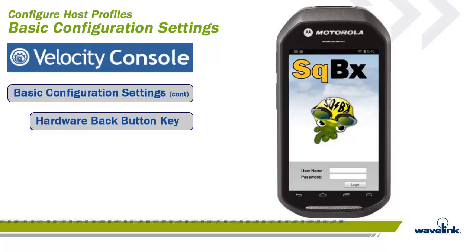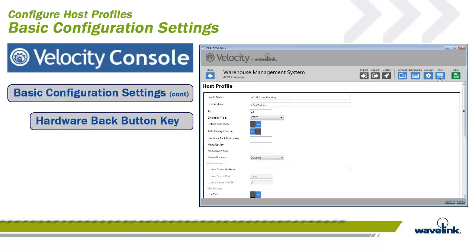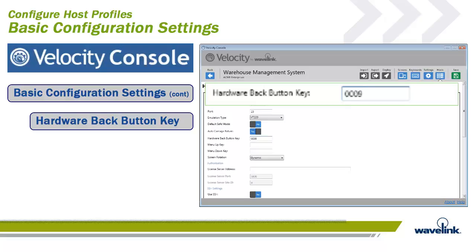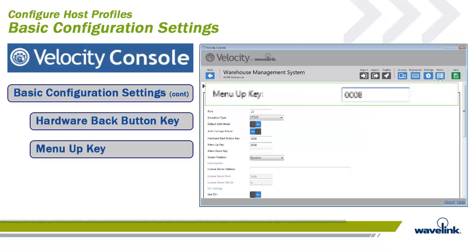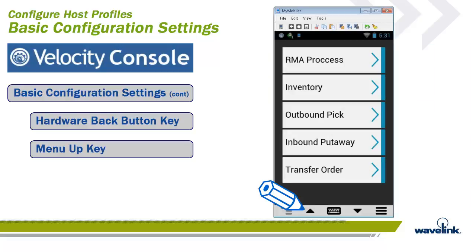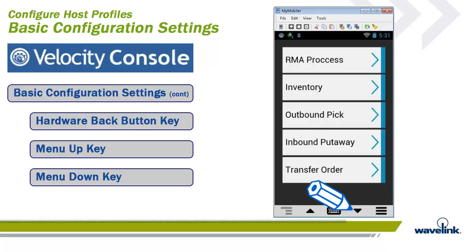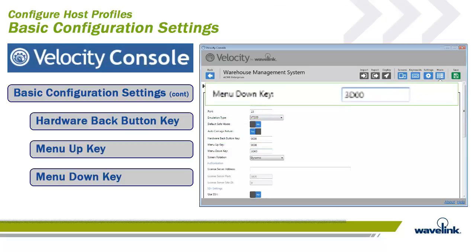Velocity can hijack some keys and remap them to perform different functions on the smart device. The Android hardware back button function can be changed by editing the hardware back button key configuration. To change the key to return a tab character, use the emulation scan or hex code 0009 in the hardware back button key field. The menu up key and menu down key are configured and function exactly the same way. These are software buttons placed to the right and left of the keyboard icon, and they only appear if the screen is found to be a menu. If any button configurations are left blank, those keys will do nothing during execution of the host application.